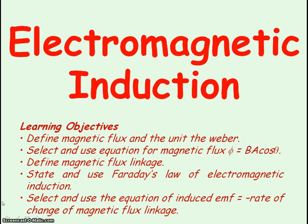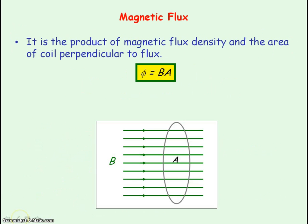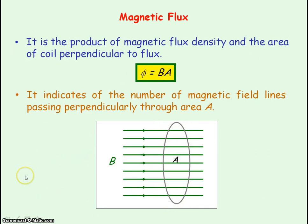We're going to be looking at electromagnetic induction, but before that we're going to look at key magnetic terms, that is flux and flux linkage. Magnetic flux is defined as the product of the magnetic flux density and the area of coil that is perpendicular to the flux. It indicates the number of magnetic field lines or the flux that is passing perpendicularly through an area A.